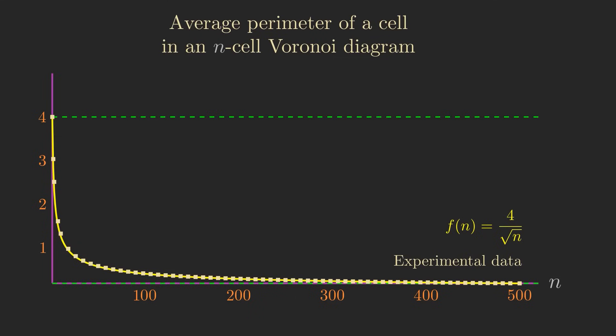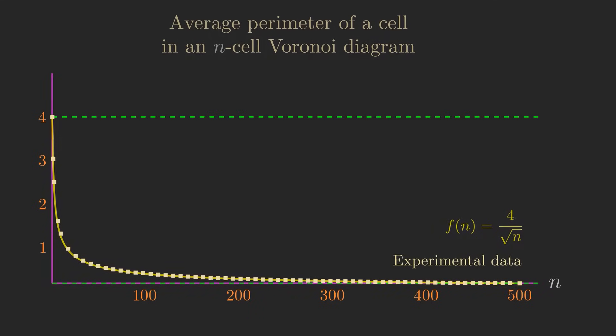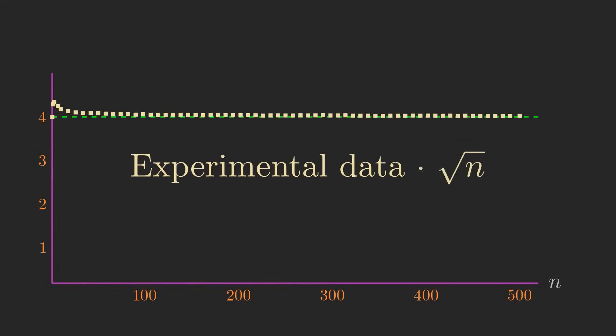The picture becomes much clearer if I multiply the heights of each of the points by square root of n for each of their respective n's. Here you can see that the data kicks up a bit for small values of n, but then converges down to a constant of 4, suggesting that it fits well with 4 over square root of n.